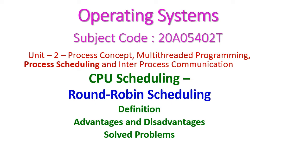Hello friends, in this lecture we will see the most important round robin scheduling algorithm from CPU scheduling. In this class we will see the definition, advantages and disadvantages, and solved problems of round robin scheduling algorithm, which is otherwise called as RR scheduling.